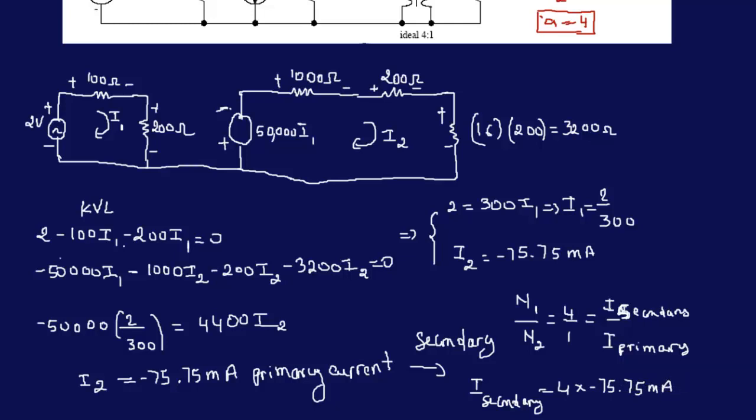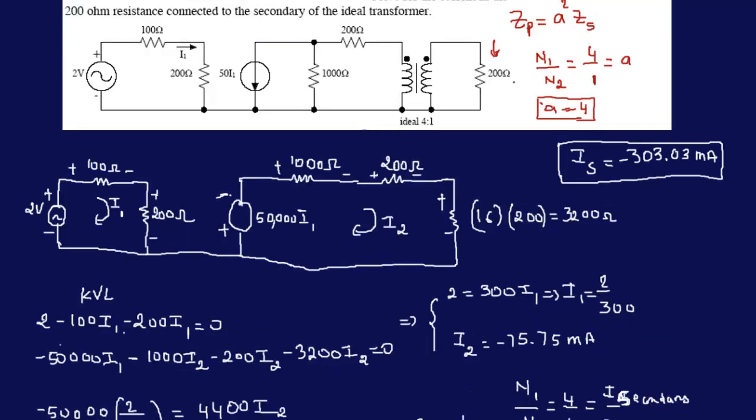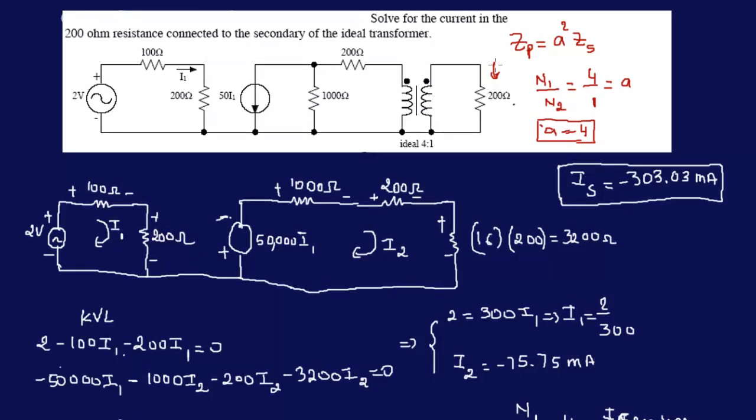So, whatever that is, is going to be our final answer. So, I2, let me put that here. I secondary, I guess, is equal to, times 4, 3.03. So, minus 3.03. 0.03, this is our answer. Yes, so this is the answer to the problem is 303. That's it, thank you.